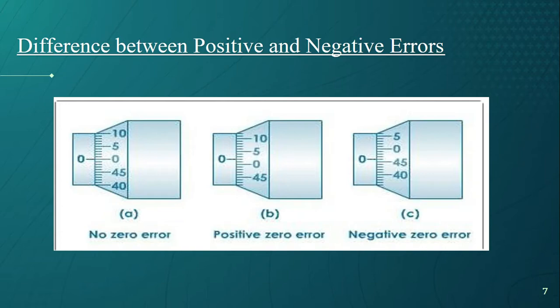On the other hand, if you look at the center figure, the zero of the main scale is above the zero of circular scale, meaning it has positive error. In the picture on right, the zero of the main scale is below the zero of circular scale, meaning it will have negative error and give measured value less than the actual value.